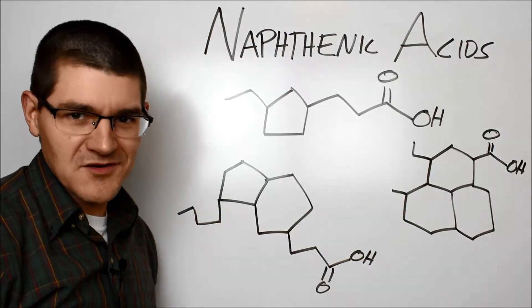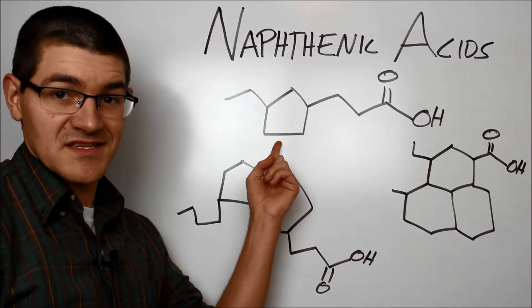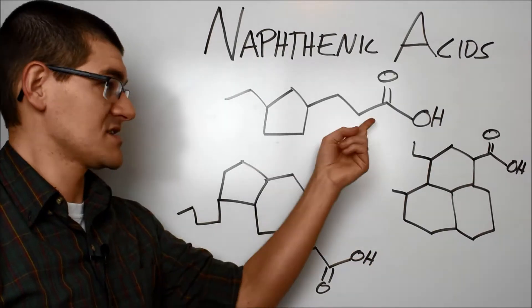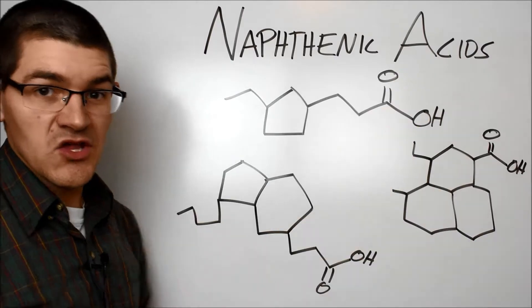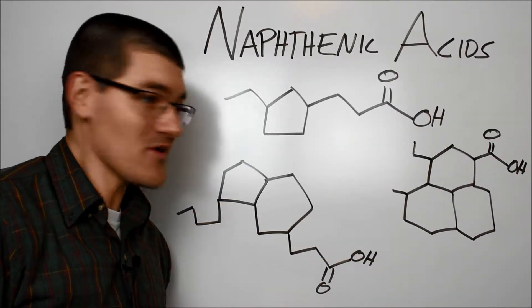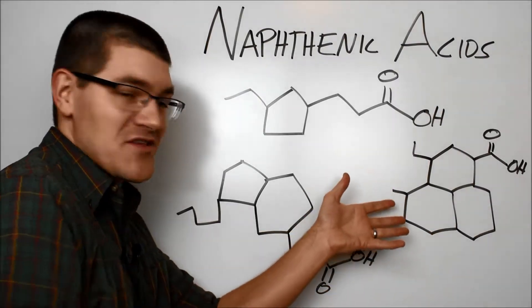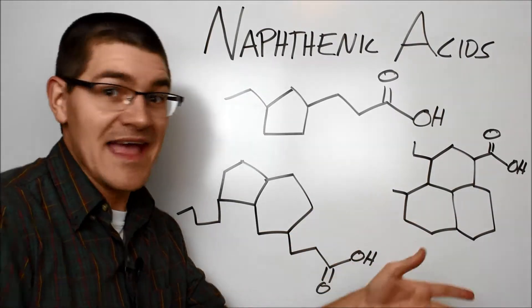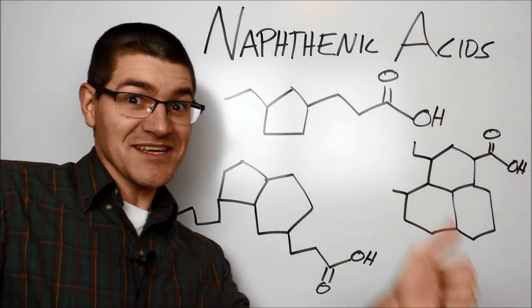But wait, there's more! It doesn't stop there, because you don't need to have just a single cyclopentyl or cyclohexyl group somewhere connected to a carboxylic acid. You can have a cyclopentyl and a cyclohexyl group with the carboxylic, or even some crazy three-ring-fused honeycomb structure like this guy. It makes no sense, but that's okay! Just deal with it!